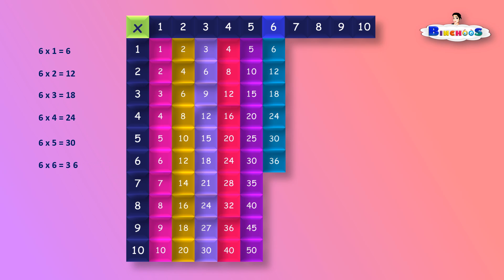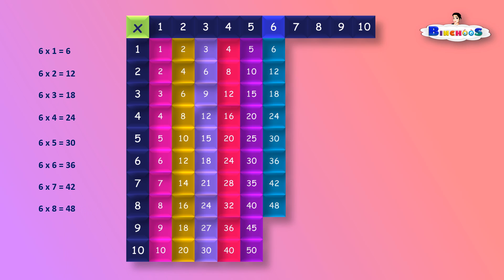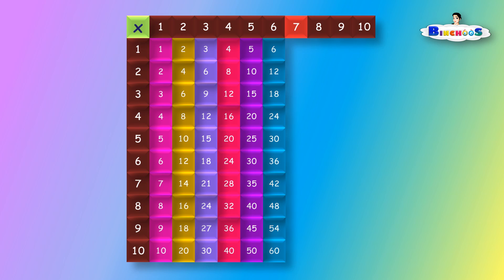6 times 6 is equal to 36. 6 times 7 is equal to 42. 6 times 8 is equal to 48. 6 times 9 is equal to 54. 6 times 10 is equal to 60. Multiplication of 7.